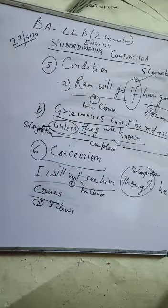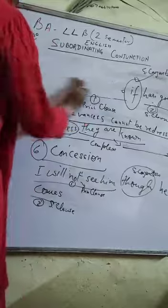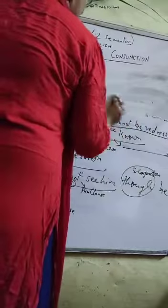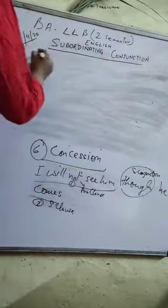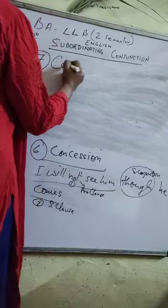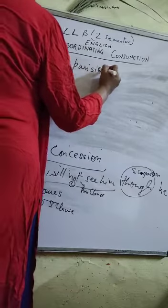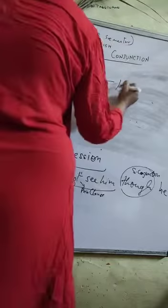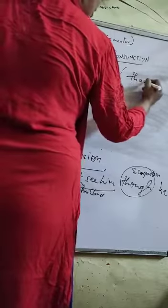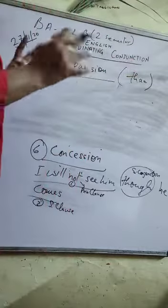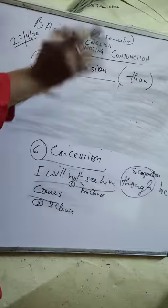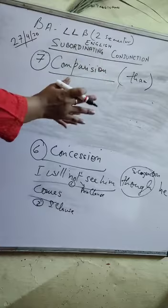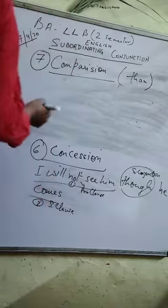एक last category: comparison. मैं आपको पहले भी बता चुकी हूँ कि 'than' जो related होता है — जिस sentence में 'than' होगा, वो sentence comparison category में आएगा. Comparison category में 'than' होता है. किसी भी दो sentences में comparison होता है — वो word जो उन दो sentences के बीच में comparison करे, वो word हमारा subordinating conjunction कहलाता है. जैसे एक example लेते हैं.